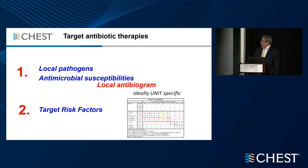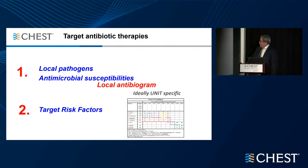To target antibiotic therapy, we really need to know about our local pathogens. The use of an antibiogram is quite important — ideally, this is unit-specific. We typically round in our ICU with the most current updated antibiogram for our patients. The second take-home message from the HAP/VAP guideline was to target therapy based on the risk factors of the patients.